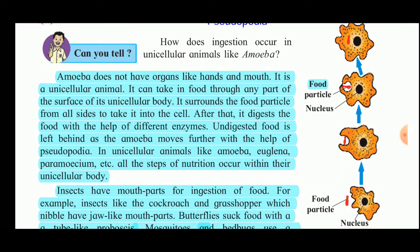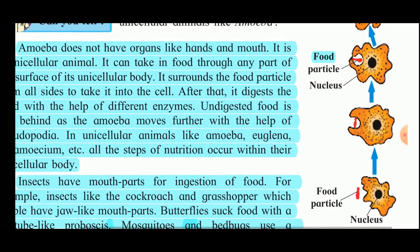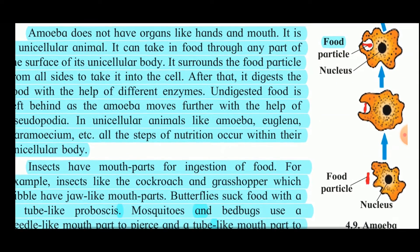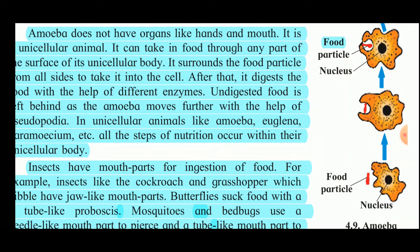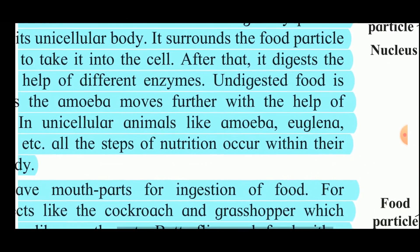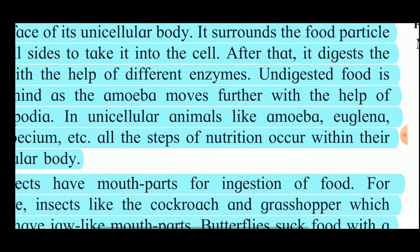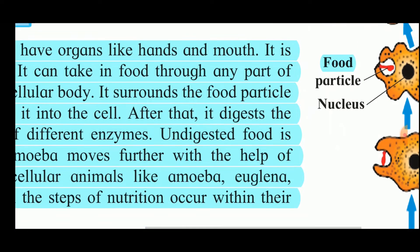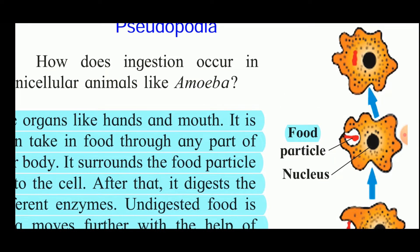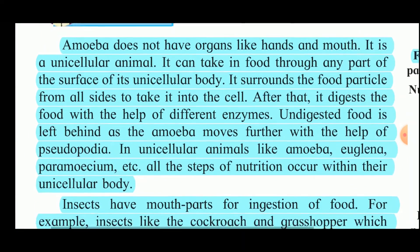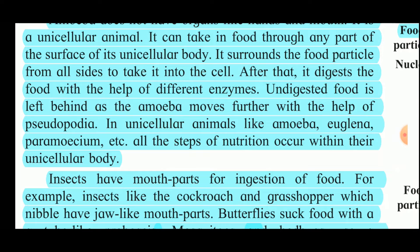Amoeba has structures called pseudopodia. Since amoeba does not have organs like hands or a mouth for taking in food, it is a unicellular animal and can take in food through any surface of its body. When a food particle comes in contact with the amoeba, the pseudopodia surround the food particle from all sides and take it inside the body. Finally, the food particle is inside the body, and amoeba digests it with the help of different enzymes. Undigested food is left behind as the amoeba moves further with the help of pseudopodia.